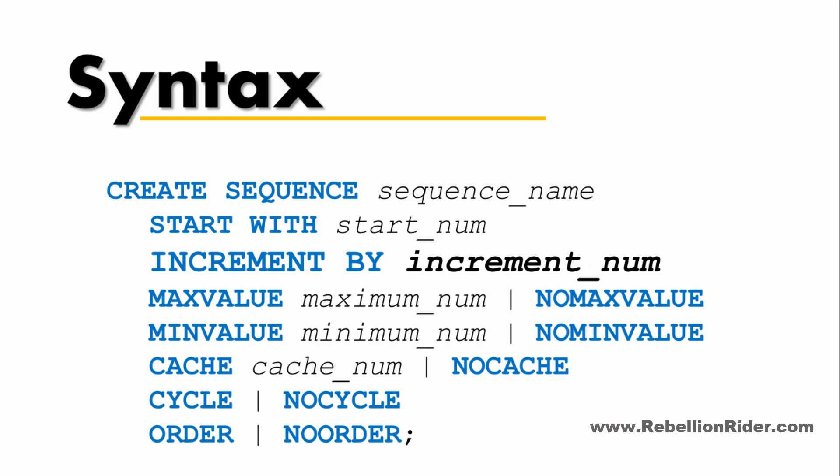The next attribute is INCREMENT BY. This attribute also takes a numeric value to increment the sequence by, and the number you specify will serve as the interval between sequence numbers. The value of INCREMENT BY cannot be 0, but it can be any positive or negative value. If the value is negative then the sequence descends; if positive then the sequence ascends. If you omit this clause then the interval defaults to 1.